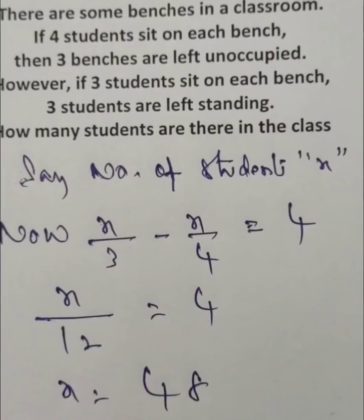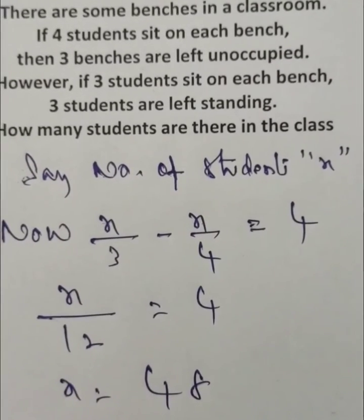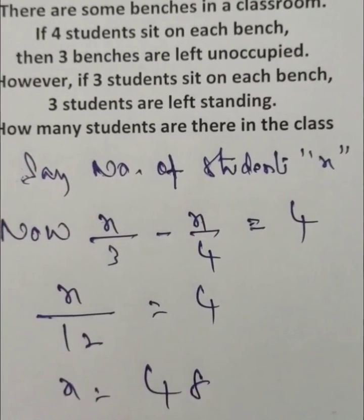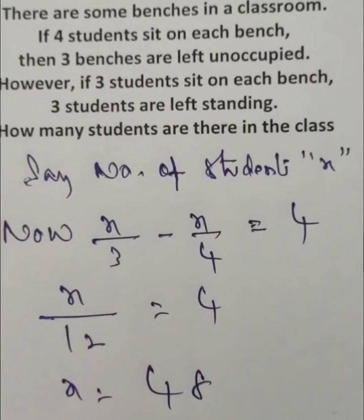That means x/12 — since 4x minus 3x gives x/12 — is equal to 4, so x is equal to 48.